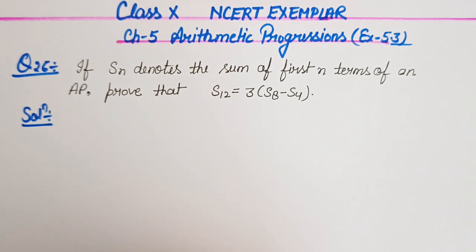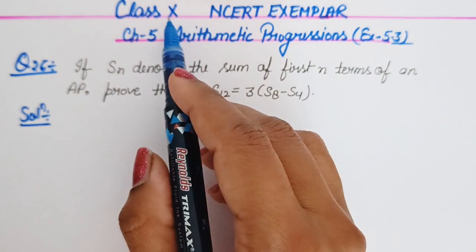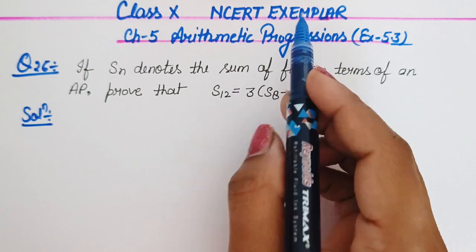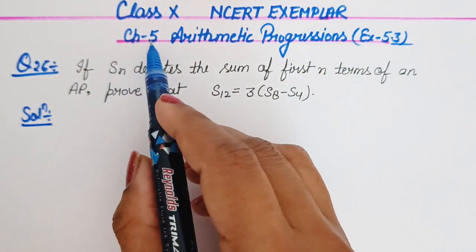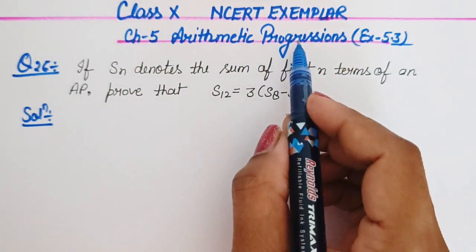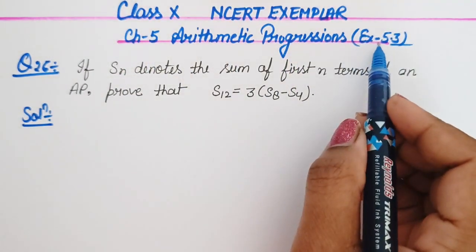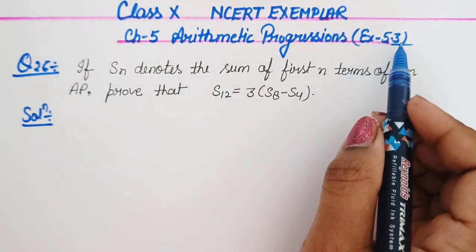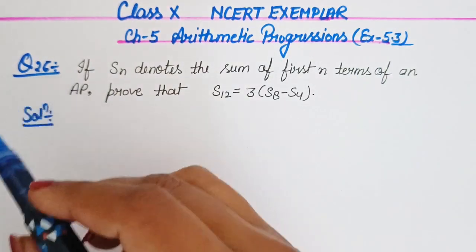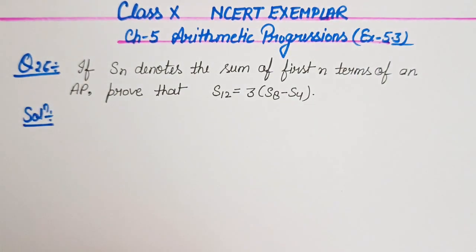Hello everyone, welcome to my channel. Today we are going to Class 10 NCERT Exemplars, Chapter number 5, Arithmetic Progressions, Exercise 5.3, Question number 26 and Question number 27.